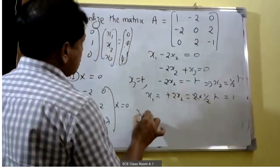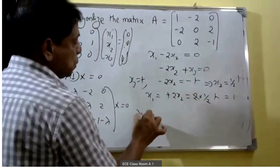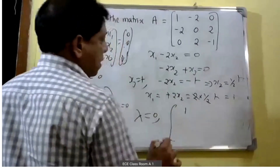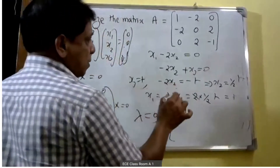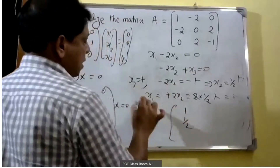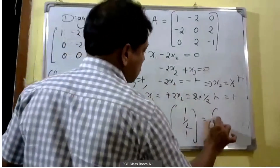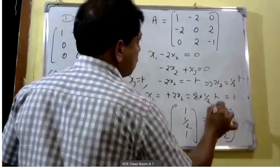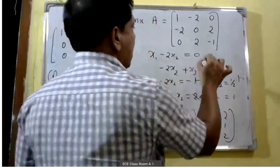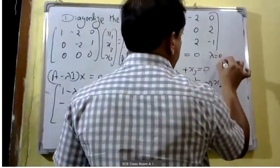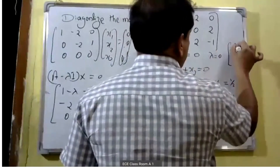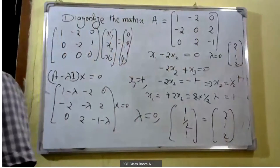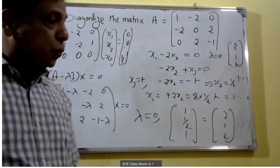Therefore, for lambda equal to zero, the first equation is x1 minus 2x2 equals zero and the second equation is minus 2x2 plus x3 equals zero. With rank equal to 2 and 3 unknowns, one variable is free. Solving gives the eigenvector as [2, 1, 2]. Therefore, for lambda equal to zero, the first eigenvector is [2, 1, 2].